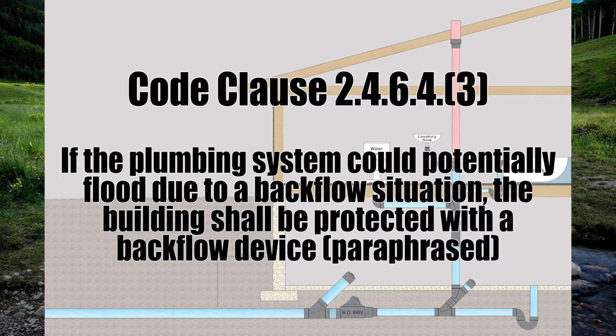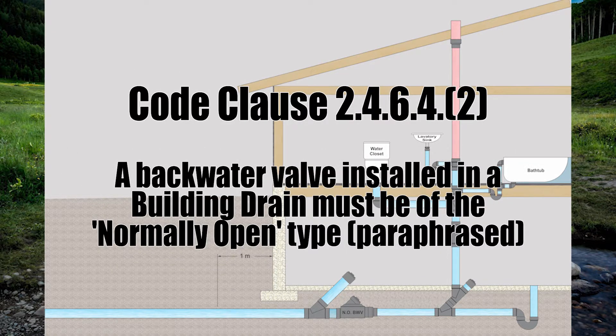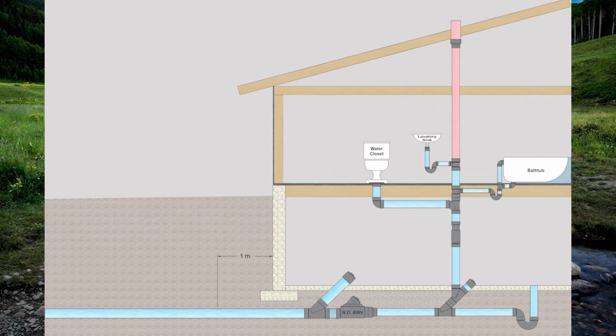The backwater valve is only mandatory when there's a chance that city sewage can back up into your house and fill up your basement. The key here is that in the building drain you are only allowed to use the normally open design. There are a number of different designs — feel free to look that up online.